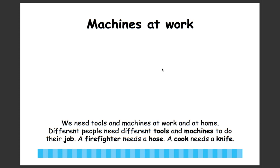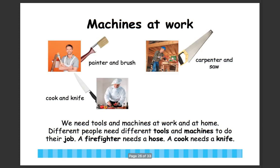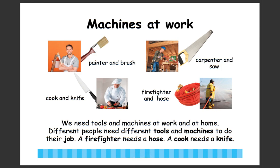Machines at work. We need tools and machines at work and at home, and different people need different tools and machines to do their job. A firefighter needs a hose, a cook needs a knife, a painter needs a brush, and a carpenter needs a saw. The saw, the hose, the knife, and the brush are all tools and machines that help people do their jobs.